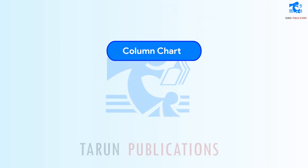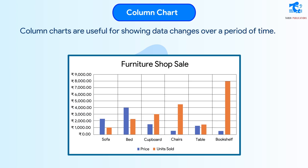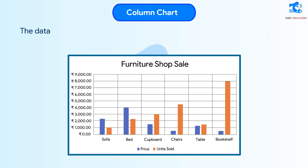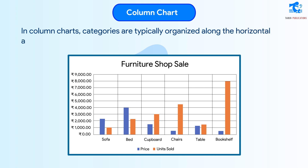Column Chart: Column charts are useful for showing data changes over a period of time. The data is represented in the form of vertical bars. In column charts, categories are typically organized along the horizontal axis and values along the vertical axis.